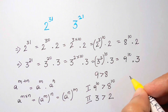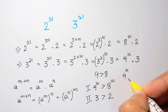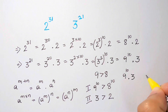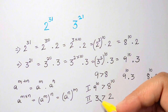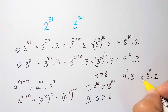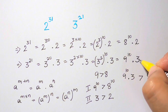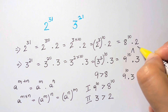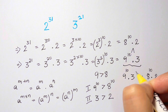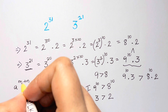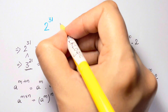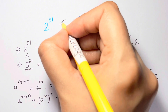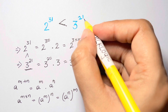So we have two inequalities. Let's multiply them both. We have 9 to the power of 10 times 3 is greater than 8 to the power of 10 times 2. Now 9 to the power of 10 times 3 is 3 to the power of 21, so 3 to the power of 21 is greater than 2 to the power of 31. Therefore, 2 to the power of 31 is less than 3 to the power of 21.